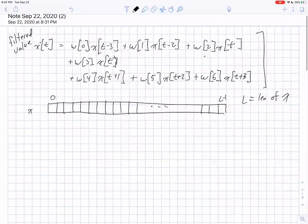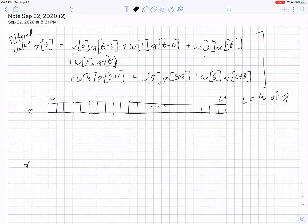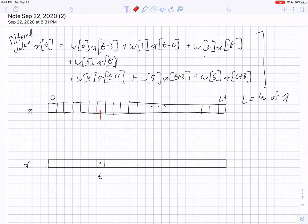And what we're saying by this equation up above is that for X prime, we're going to set things up such that X prime is exactly the same length. And when we are computing, say, this value here at time T, what we mean by that is that it's a weighted sum of the elements of X. And in particular, this element here, X of T, has a weight of W3.